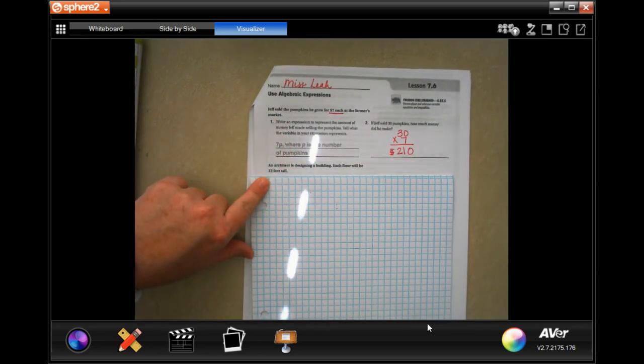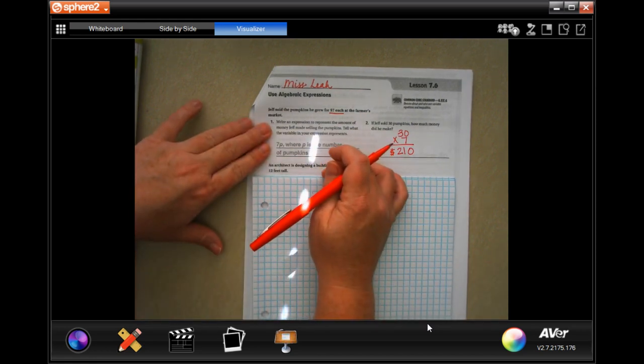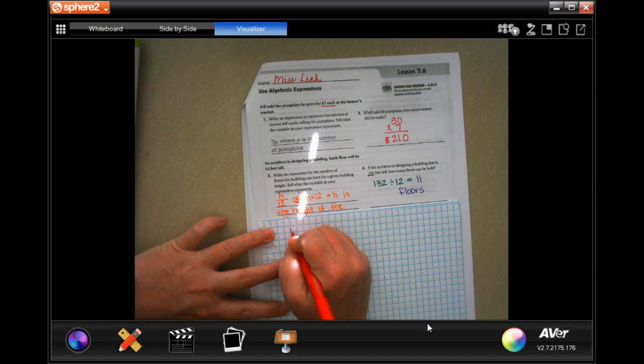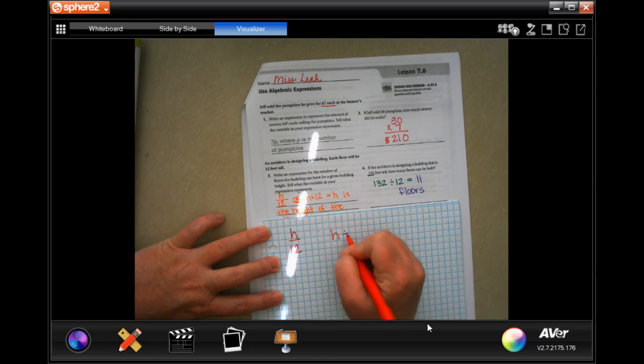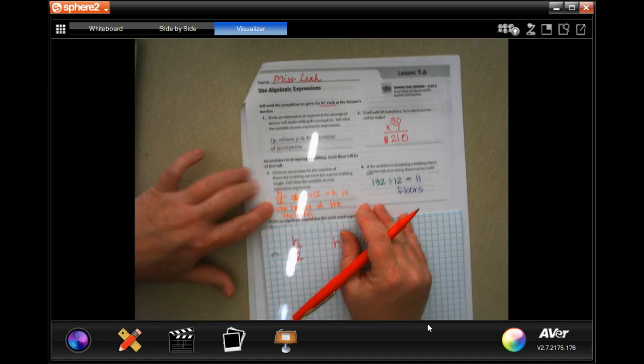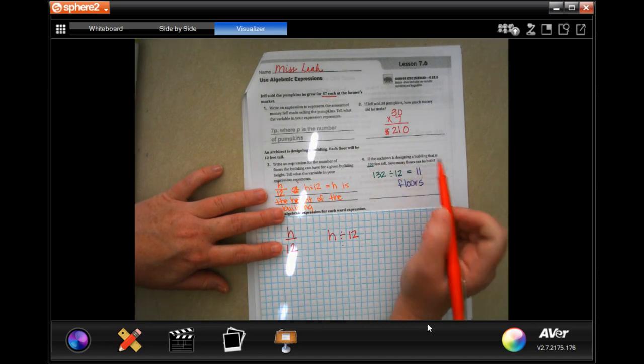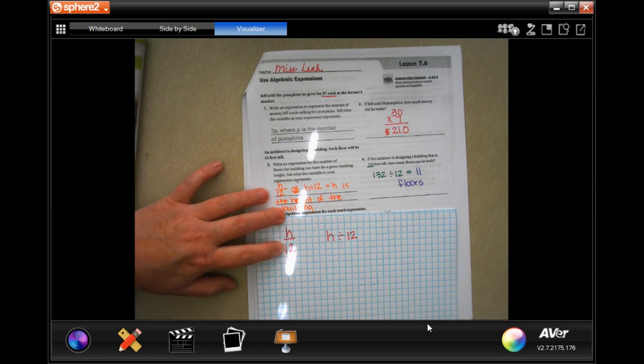An architect is designing a building, and each floor will be 12 feet tall. So the formula that's going to go with that would be either H over 12, which means H divided by 12, or you could put H divided by 12, whatever that is. Then that means that H is whatever the height of the building is. So over here, it says that the building that they're designing is 132 feet tall. How many floors can be built? Well, 132 divided by 12 is 11. It means 11 floors, because it's asking how many floors.